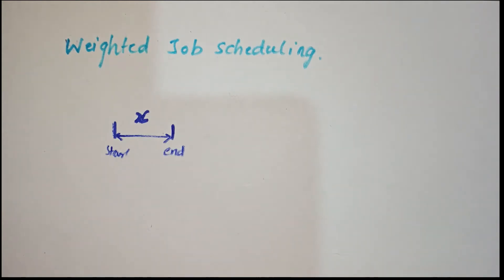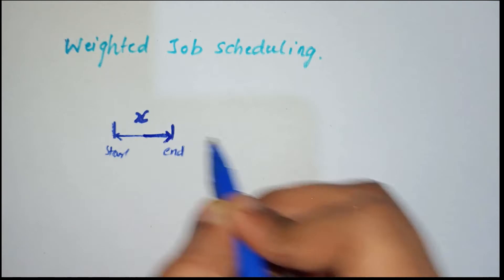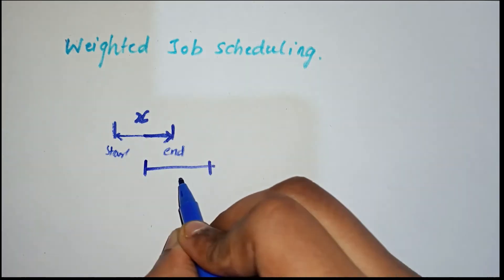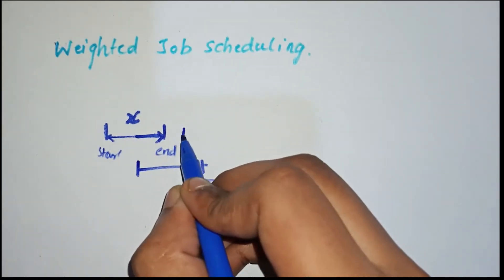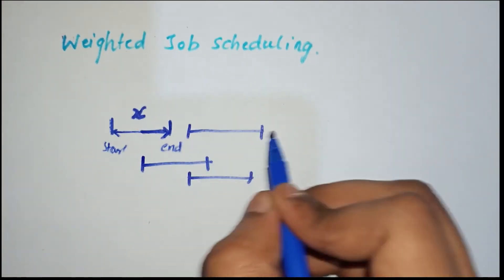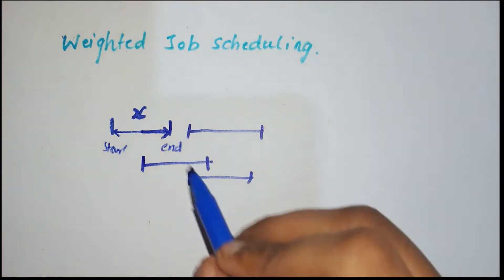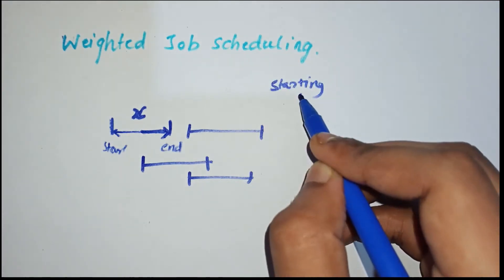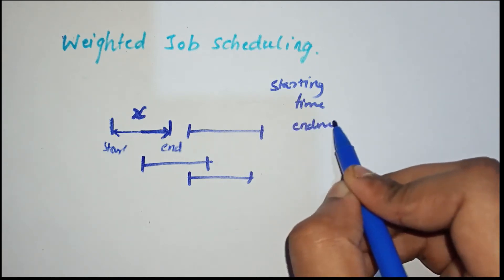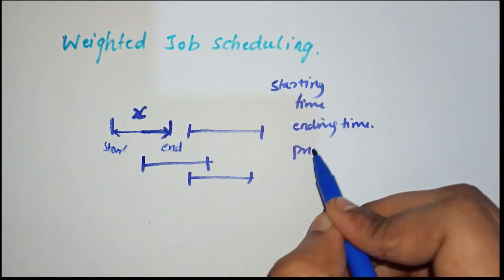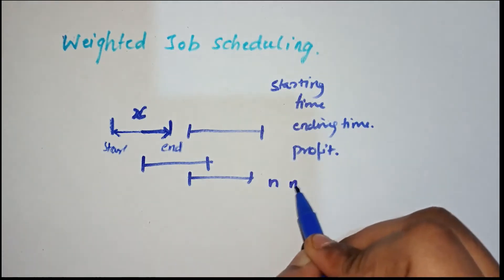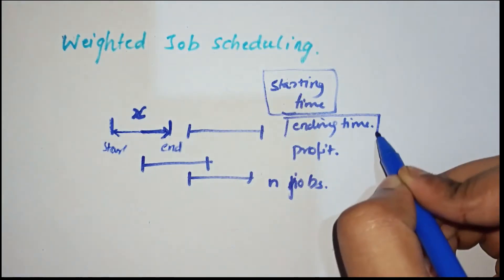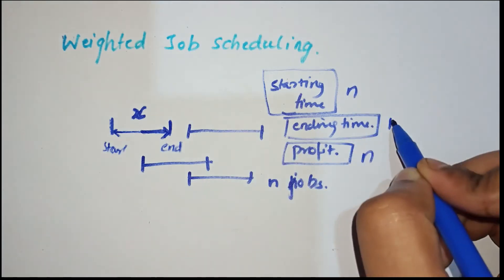There are numerous jobs — a job can start and end at various times, all depending upon starting time and ending time. It's given in the form of three arrays: first array is starting time, second is ending time, third is profit. Let there be N number of jobs, so every array will be of size N.